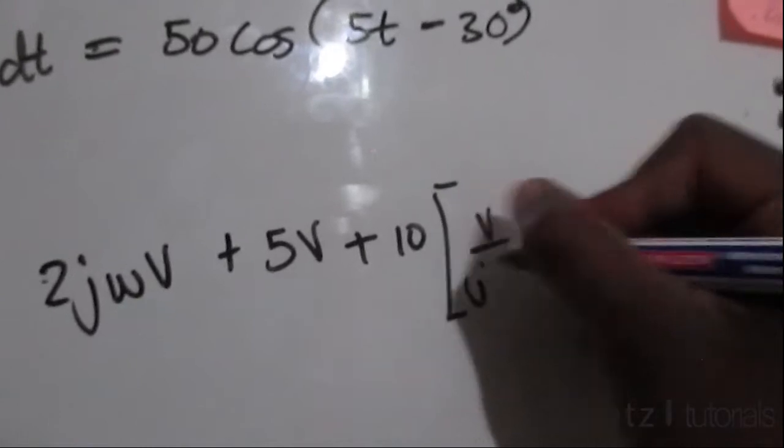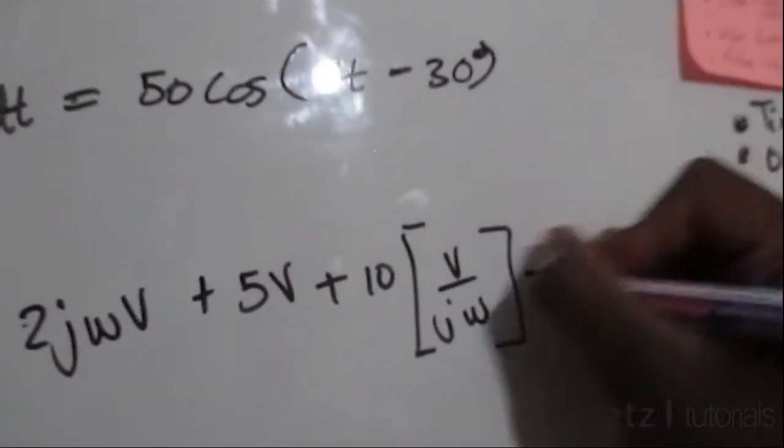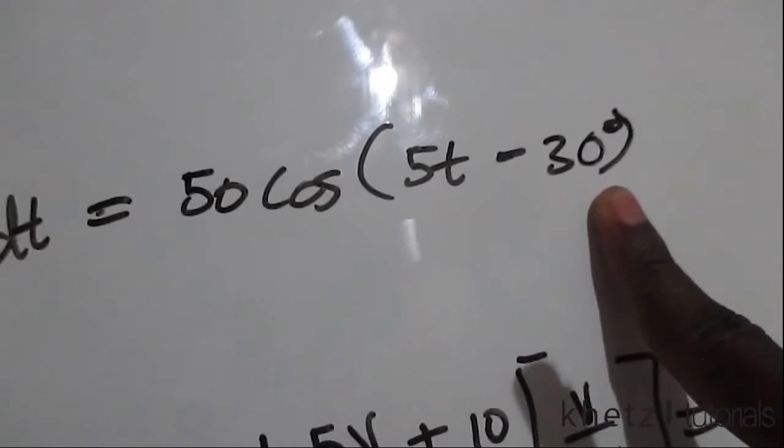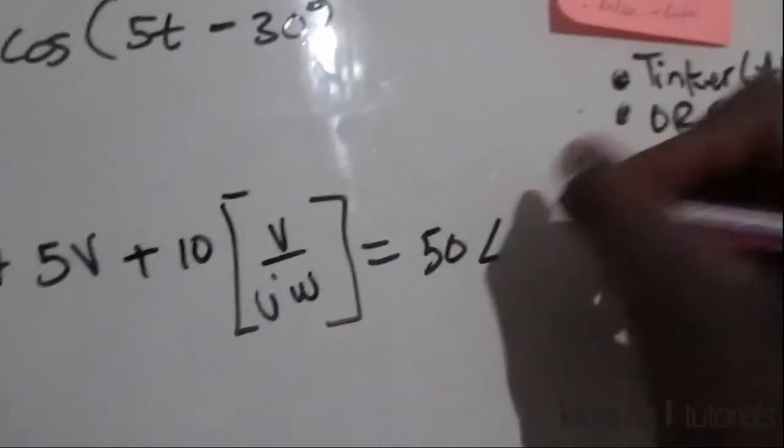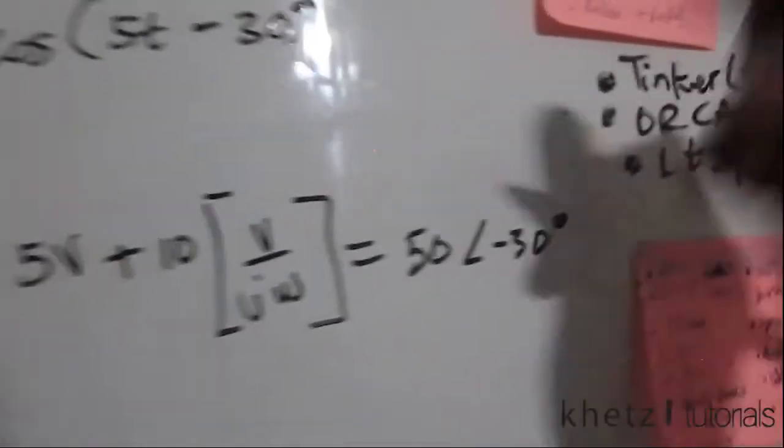This equals to, and then we can transform this into its phasor form which is going to be 50 with an angle of negative 30 degrees. So that is that.